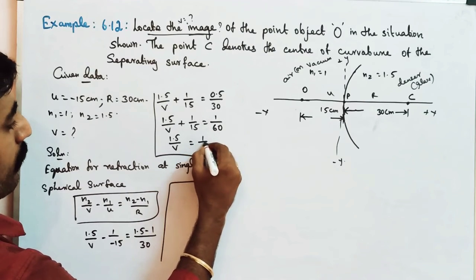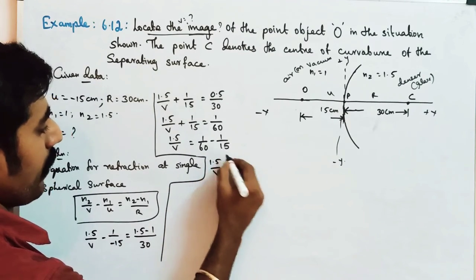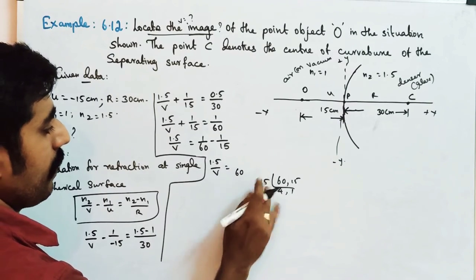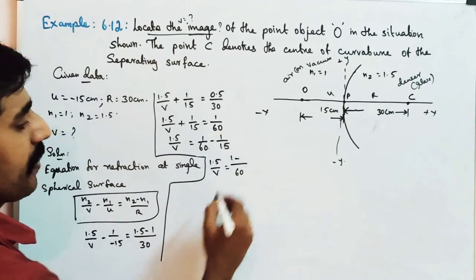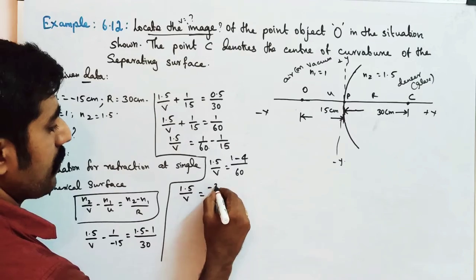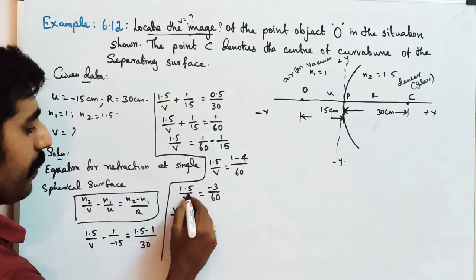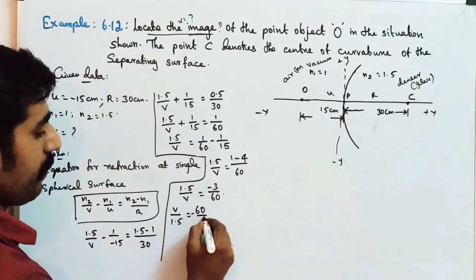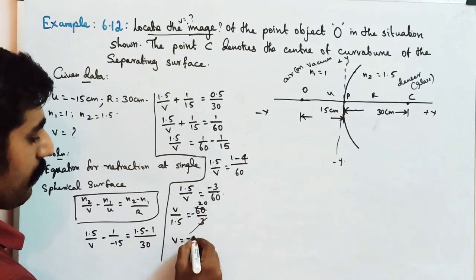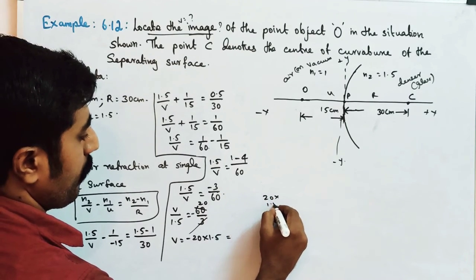So 1.5/v equals 1/60 minus 1/15. Taking LCM as 60: 1/60 minus 4/60 equals minus 3/60. Therefore 1.5/v equals minus 3/60. Taking reciprocal: v/1.5 equals minus 60/3 equals minus 20. So v equals minus 20 multiplied by 1.5, which equals minus 30.